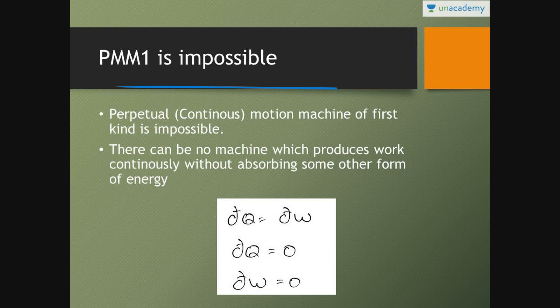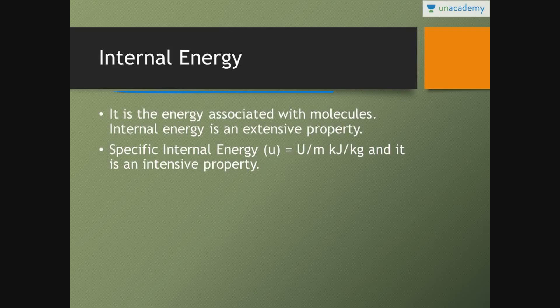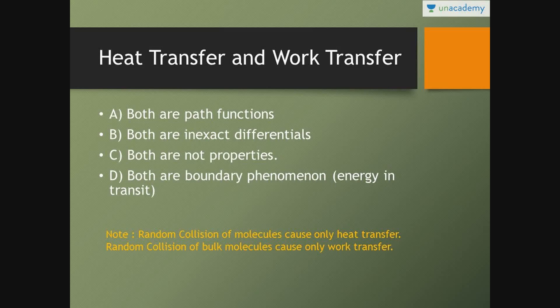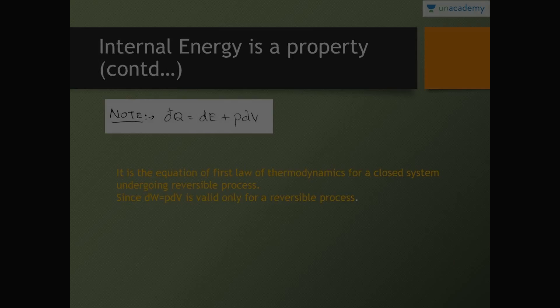PMM1 — perpetual motion machine of the first kind. Always remember: perpetual motion machines are impossible, whether first, second, or third kind. There can be no machine which produces work continuously without absorbing some form of energy. There is no machine that can give work output without consuming any form of energy. This is the perpetual motion machine of the first kind — it is impossible, as a consequence of the first law.